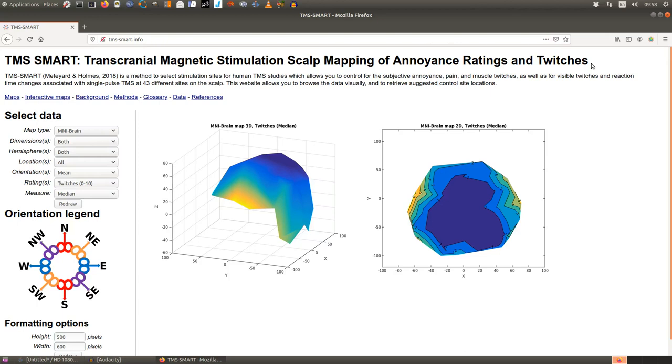We also visually recorded whether their muscles of their scalp twitched and we also asked subjects to do a reaction time task at the same time. From all these measures we created maps as you can see on the screen: maps of how twitchy the parts of the scalp are, how painful, how annoying and how much TMS interfered with reaction time on this task.